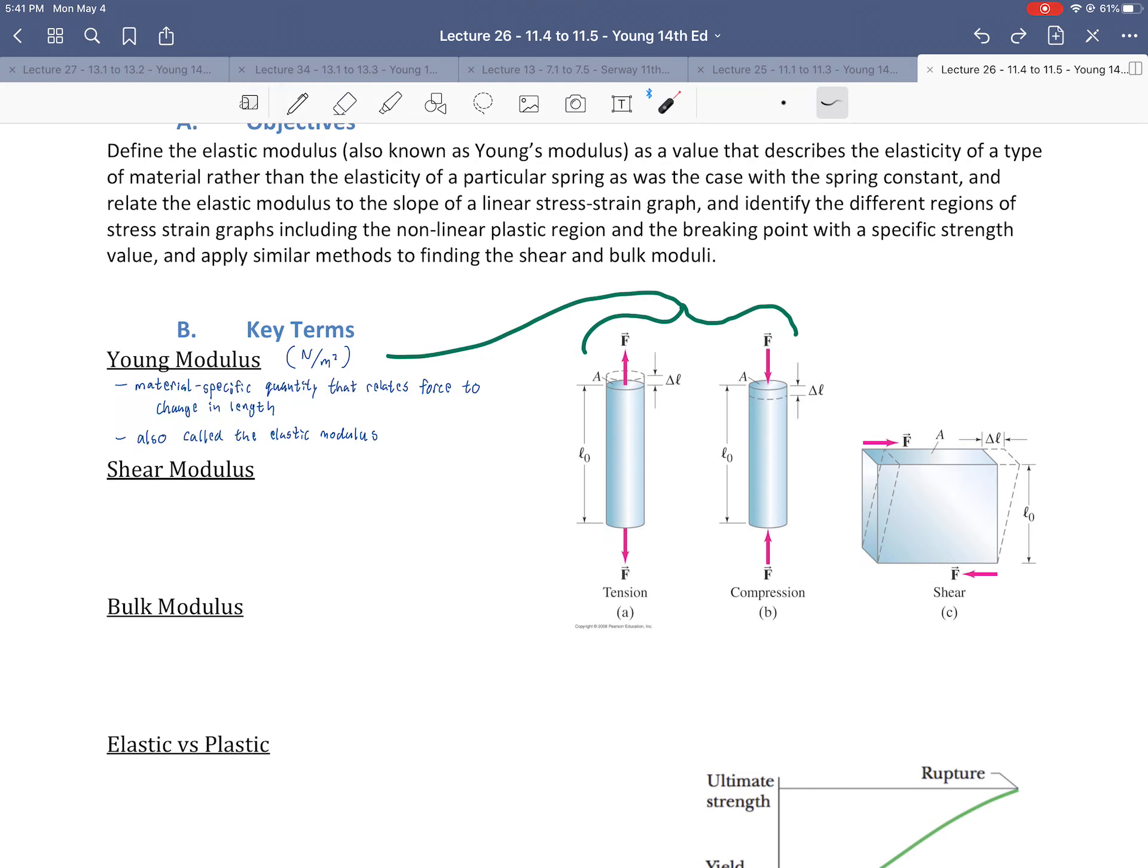It is also called the Elastic Modulus, and you may hear me calling it that quite a bit. Take a quick note of its units: Newton per square meter, so it's a force per area. Compare that to the units of the spring constant, which was Newtons per meter, force per length. What we've done here is we've divided force by cross-sectional area, thus normalizing the force per area. That's why we don't have to worry about the size of the sample of rubber or glass or whatever it may be, because we've divided by the area.